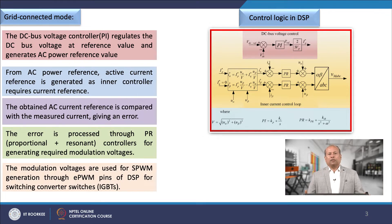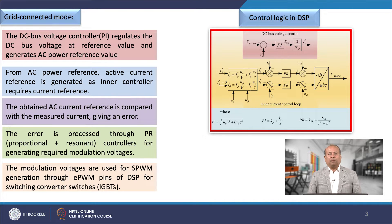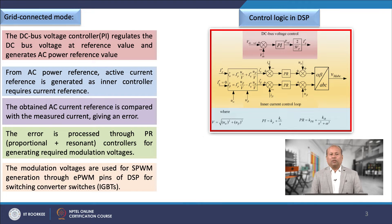Now, the grid-connected mode of operation: this slide shows the control logic used for interfacing the DC microgrid with the AC grid. The DC bus voltage controller regulates the DC bus voltage at the reference value and generates the AC power reference value. The active current reference is generated from the AC power reference, as the inner controller requires a current reference. The obtained AC current reference is converted to the stationary reference frame, and this current reference is compared with the measured current, which normally gives an error.